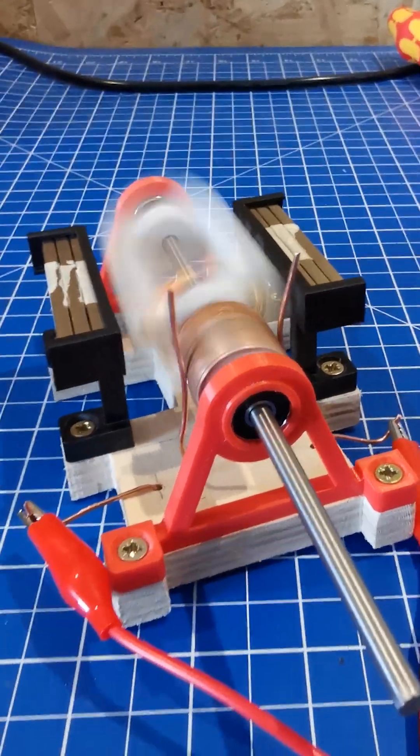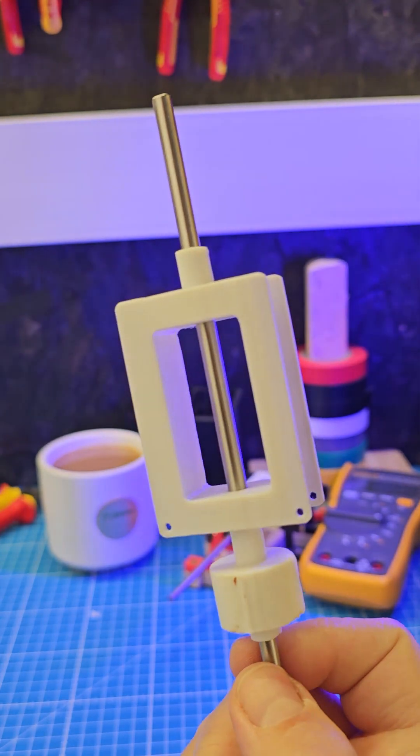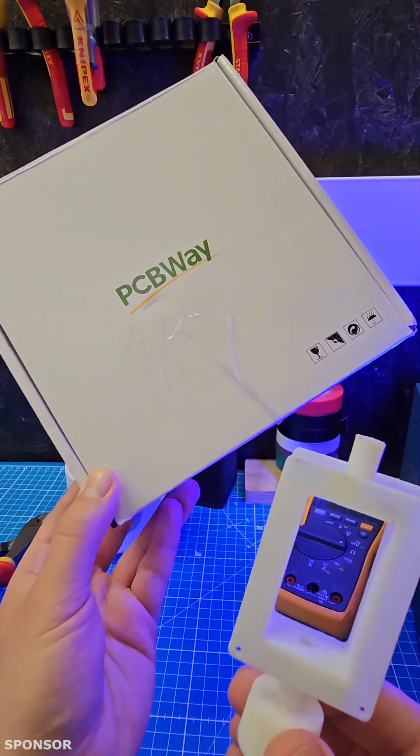You can build this electric motor. Take some enameled copper wire and get this 3D printed part. All the files are free to download. I ordered mine from PCBWay who sponsored this video.